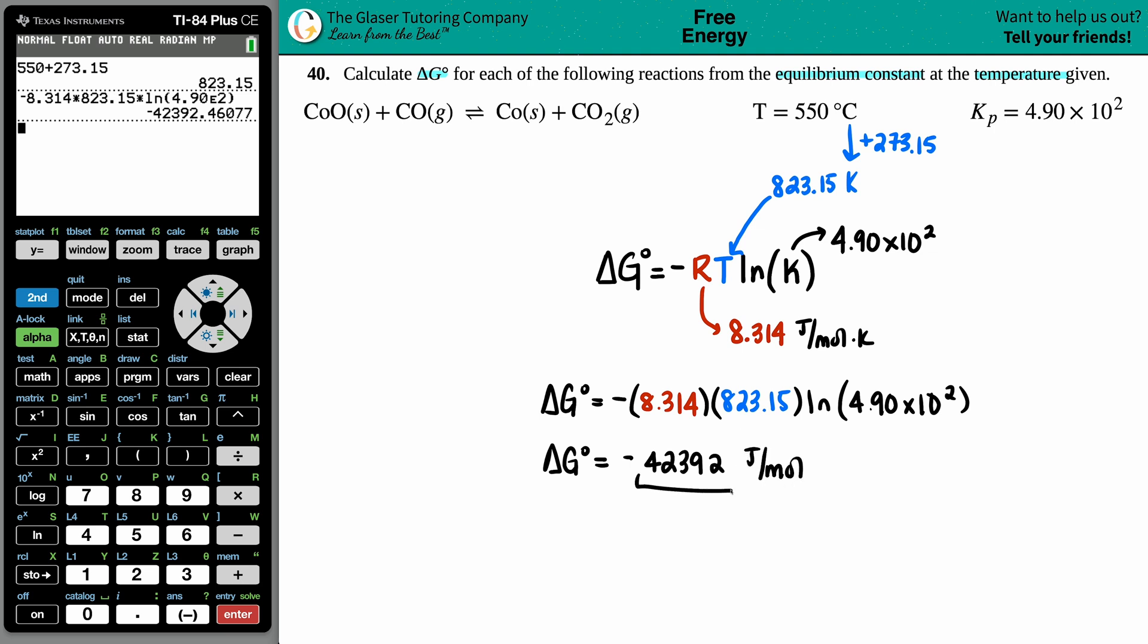But since this is a really small number, we like to just convert it into kilojoules. Generally speaking, delta G's are in kilojoules per mole. To go from joules to kilojoules, all we got to do is divide by 1000 or move the decimal over to the left three times.